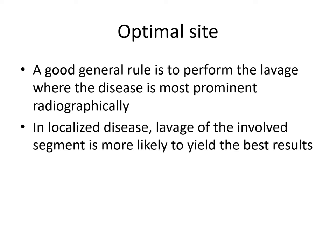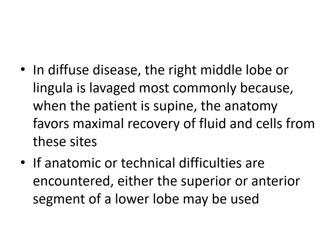What is the optimal site for performing BAL? A good general rule is to perform the lavage where the disease is most prominent radiographically. By doing an X-ray or CT scan, if the disease is localized to a particular lobe, you take BAL from that lobe. In localized disease, lavage of the involved segment is more likely to yield the best results. In diffuse disease, when the entire lung is involved, it is preferable to take BAL from the right middle lobe or from the lingula on the left side, as the yield is highest from these lobes when the patient is lying supine.